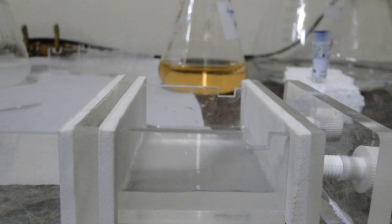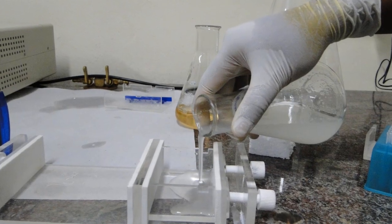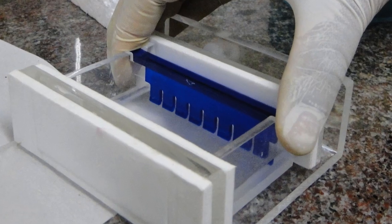Gel casting trays, which are available in a variety of sizes and composed of UV transparent plastic, and sample combs around which molten agarose is poured to form sample wells in the gel.